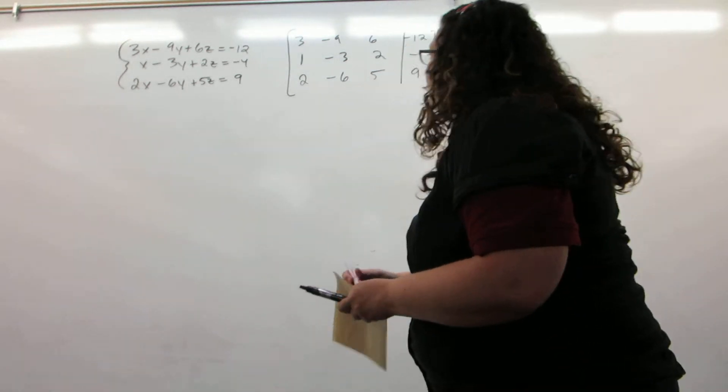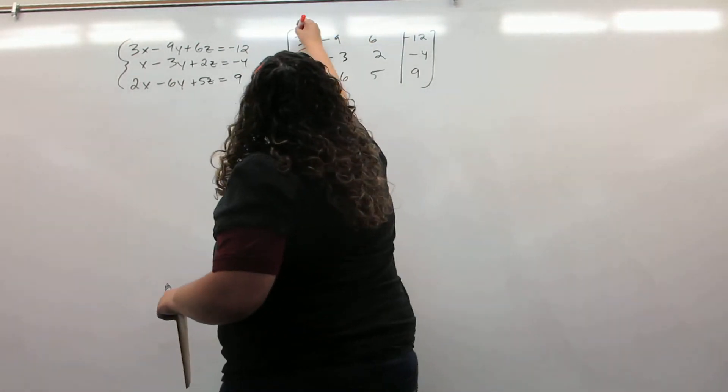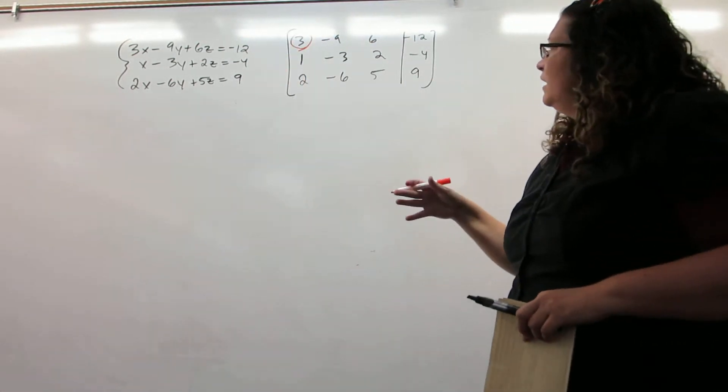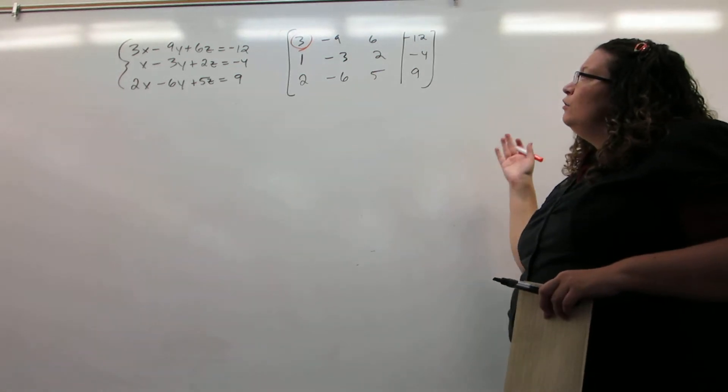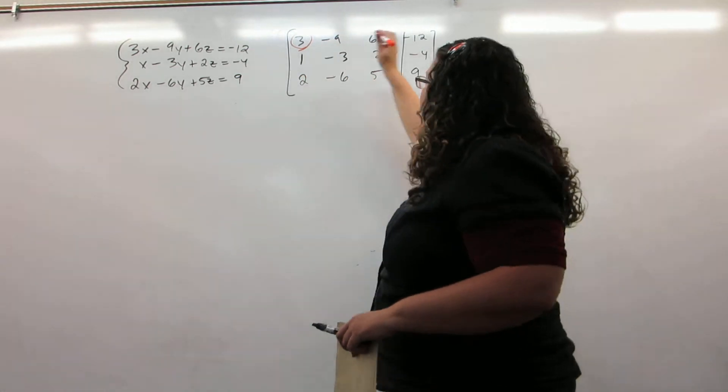Now, our first step in trying to row reduce the matrix is to get a 1 right here. We could divide that whole row by 3, or we can simply flip-flop the first and second rows since this already has a 1.